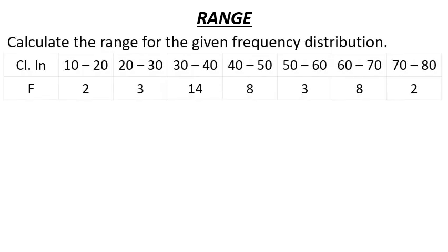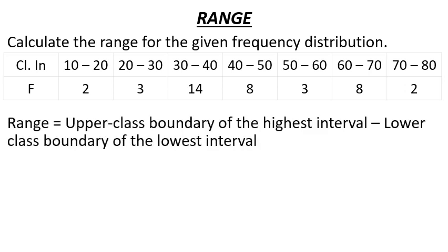Then calculate the range of the given frequency distribution using a grouped frequency class interval. The highest class interval has an upper class boundary of 80. The range is derived from the upper boundary of the highest interval.